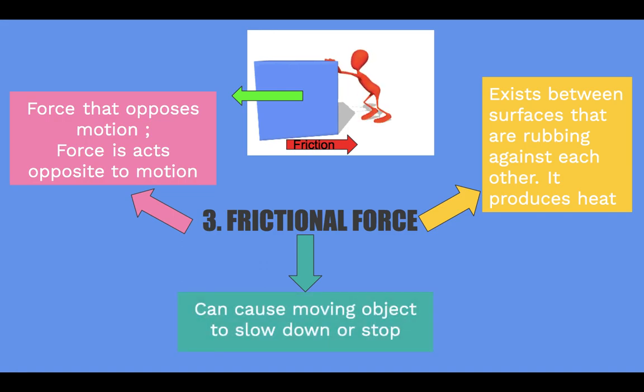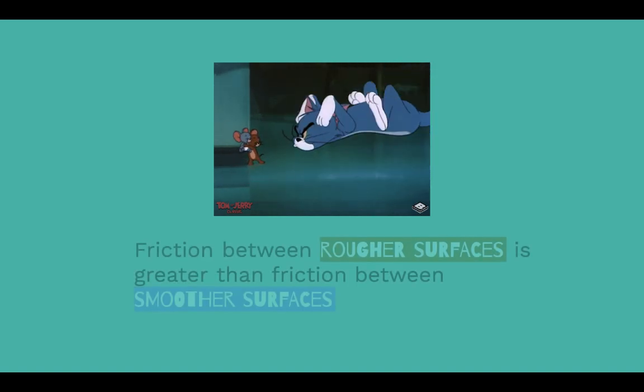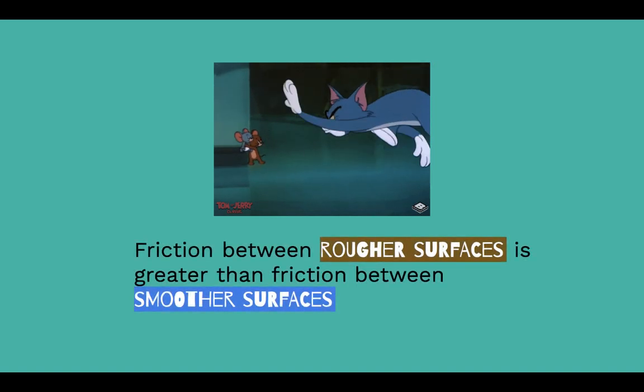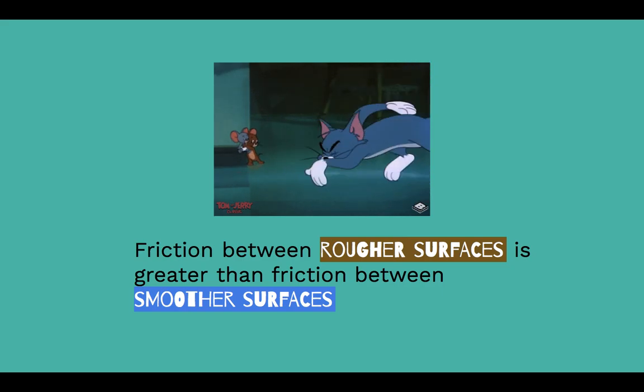Frictional force can cause moving objects to slow down or stop. This is because the force acts opposite to the motion. It is easier to slip on wet surfaces than dry surfaces. Why is this so? Friction between rougher surfaces is greater than friction between smoother surfaces.